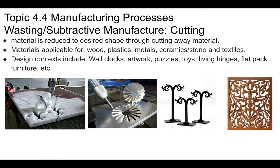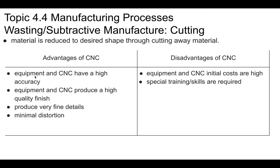Advantages of CNC cutting include very high accuracy, much better than cutting by hand. It produces a nice finish quality, fine detail, and minimal distortion. Disadvantages include high cost — our laser cutters are $25,000 each, and the laser tubes cost $10,000 to replace when needed. Special training and skills are also required; you can't just try a water jet cutter without proper training.